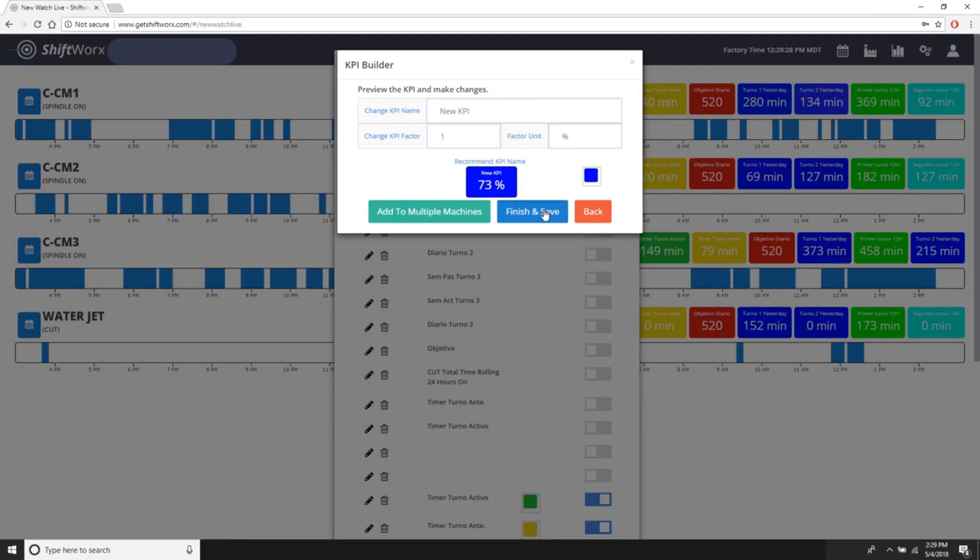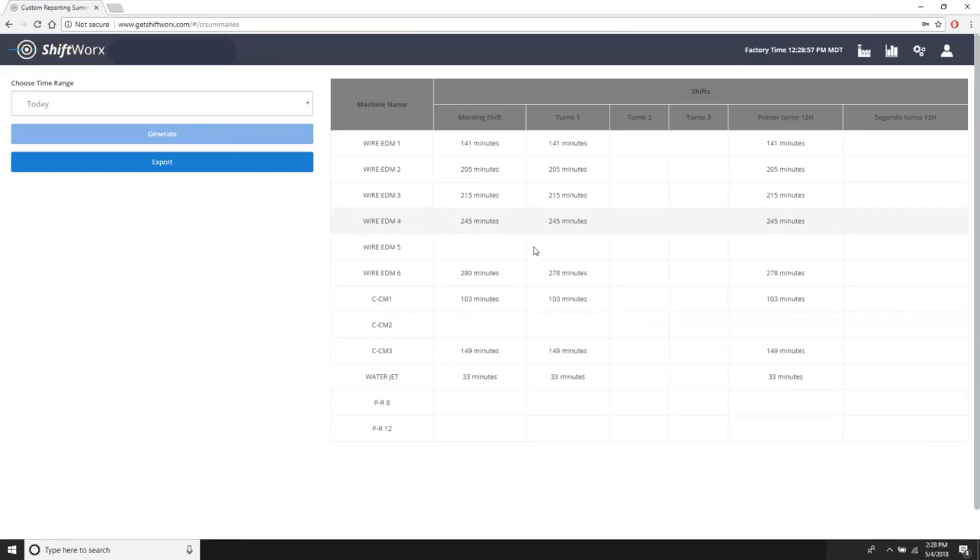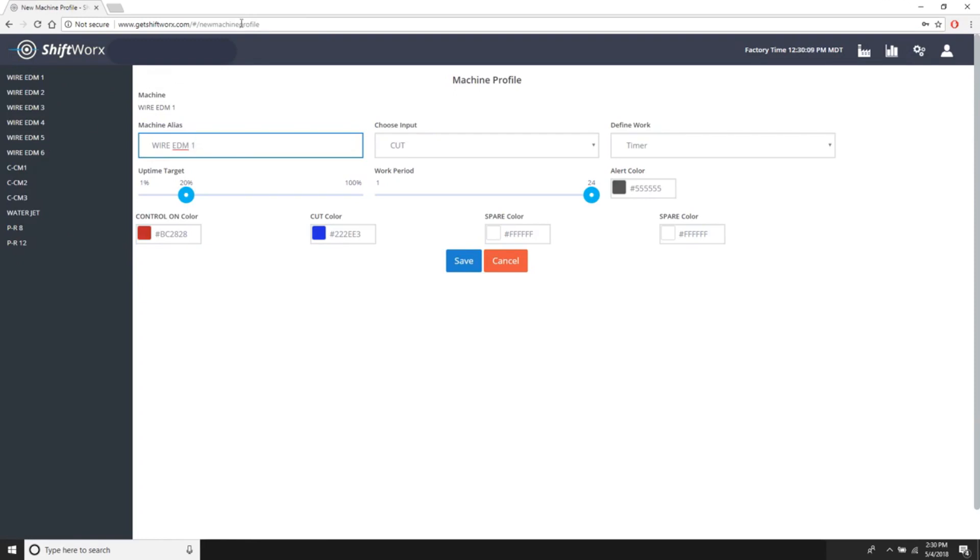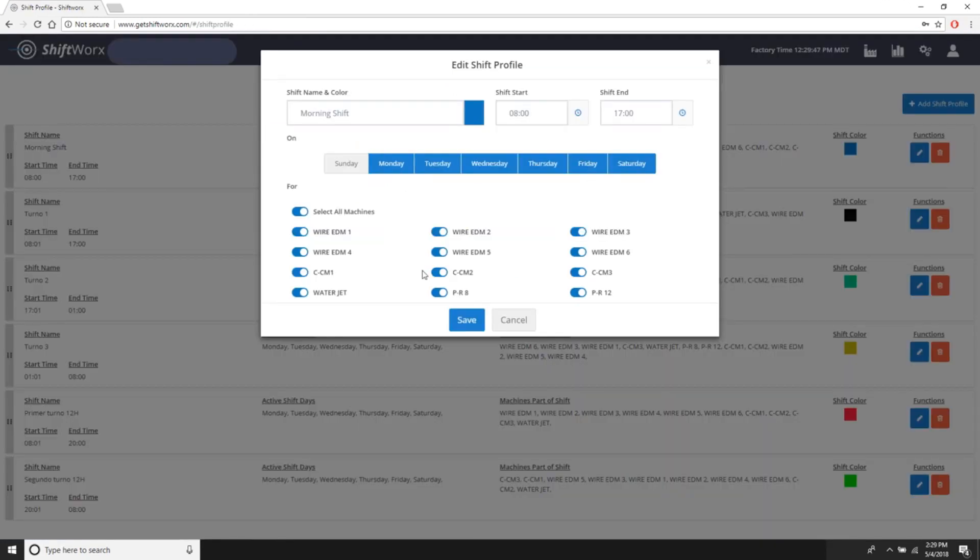WatchLive contains many functions, including KPIs, summaries, and reports. It is also where most of the initial setup occurs, including developing each machine's profile and creating shifts.